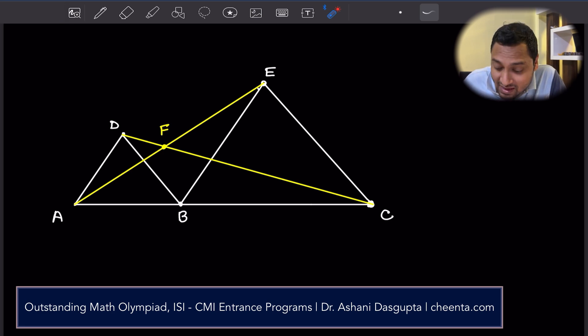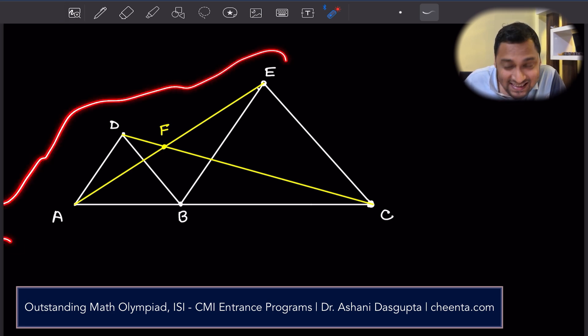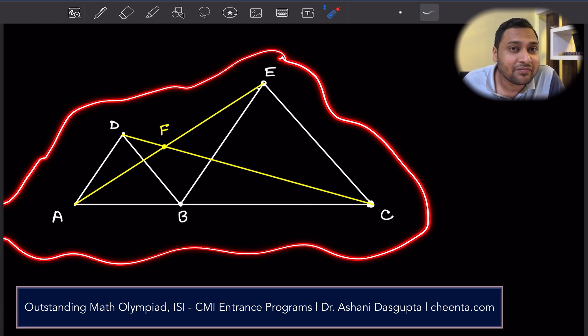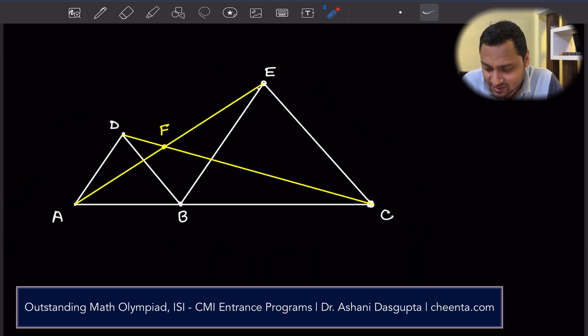This particular problem came up in NMTC, a mathematical olympiad from India. But this strategy will be useful for other mathematical contests like American Math Competition, IOQM and so on. Now, let's look at this. It's a very surprising little problem with a twist.